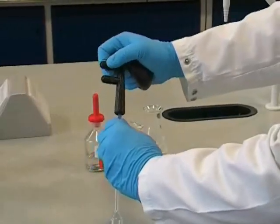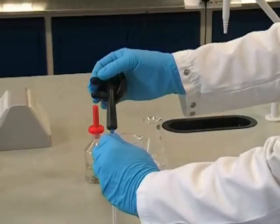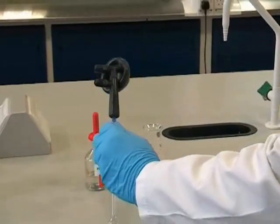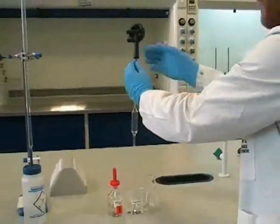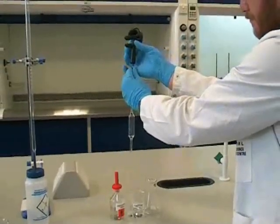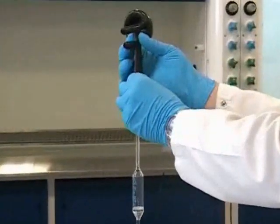Now we can press the appropriate button on the pipette filler and gently squeeze the bulb to expel the air. We're now able to draw up some of our solution into the pipette. We place the pipette into the solution and press the appropriate button on the filler, and this draws the solution into the pipette.